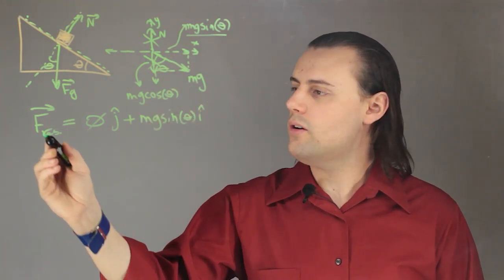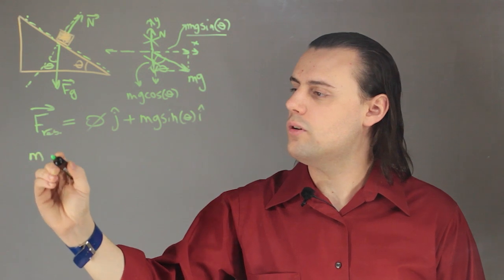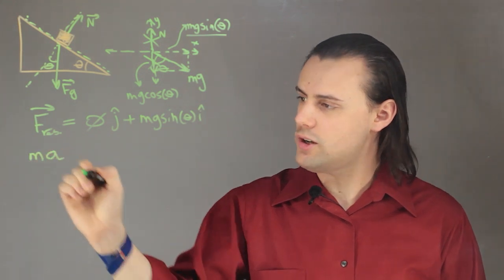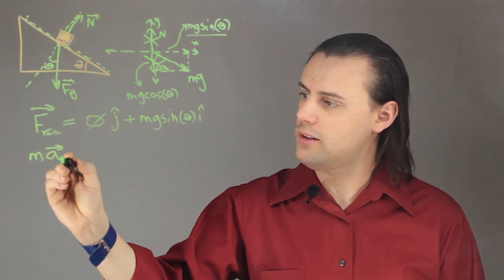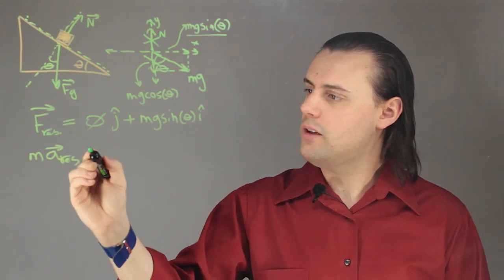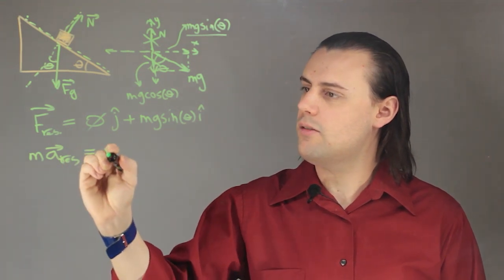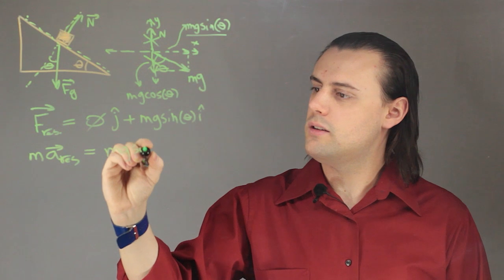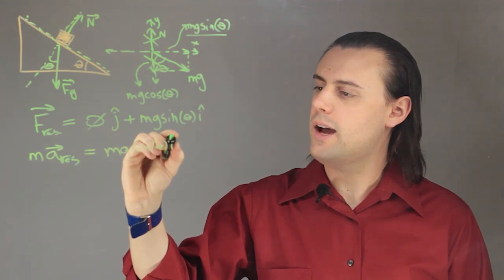So I know that my resultant force vector is equal to the mass of the object in question times the resultant acceleration vector. So it's simply going to be equal to mg sine theta i-hat.